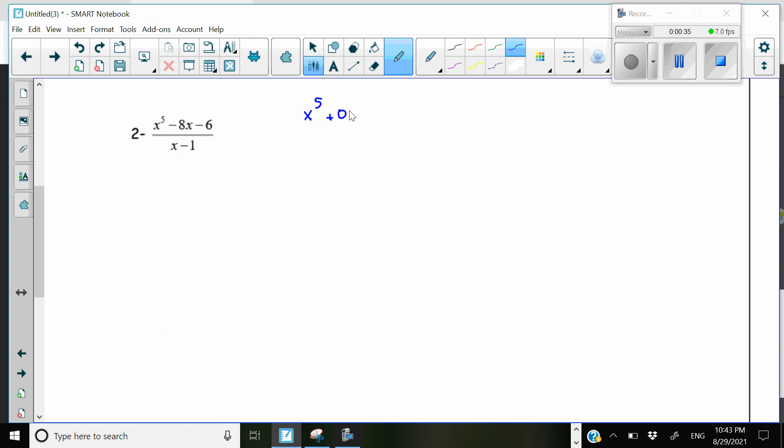x to the 5 plus 0x to the 4 plus 0x to the 3 plus 0x to the 2 minus 8x minus 6. Okay, so our polynomial is ready to divide. The divisor is also in order and also it doesn't have any missing terms, so it's good.